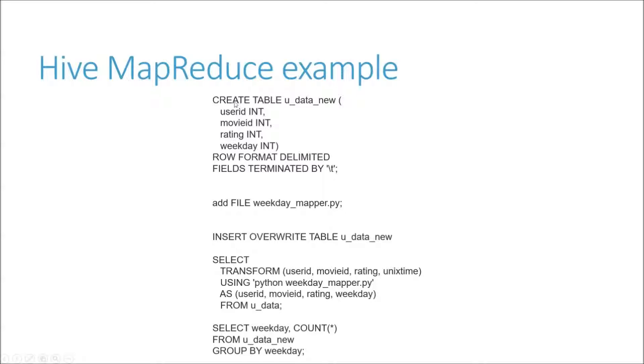We're going to create a new table, uData_new, that's going to take a weekday instead of a timestamp. We're going to add our little Python script into the mix with add file weekdaymapper.py. Then we're going to say we're going to put into our new data table this transform that uses our Python script to transform Unix times into weekdays from the UData table. When we're done, all of our data from the UData table will be transformed into our UData_new table, and we can then query the new weekday field instead of a timestamp.